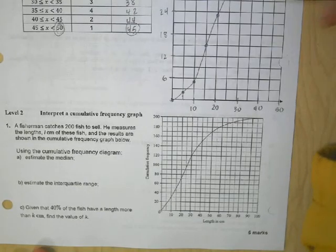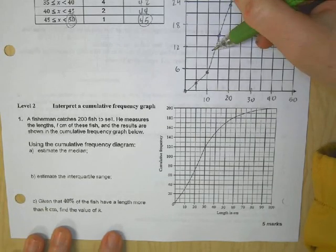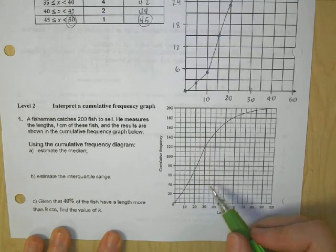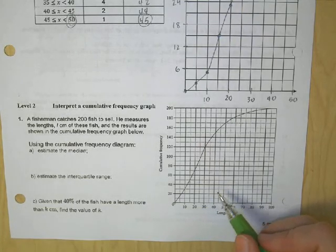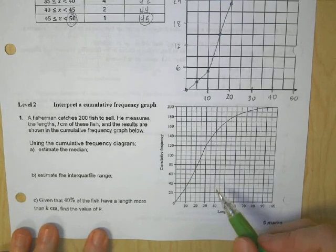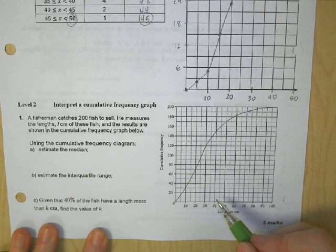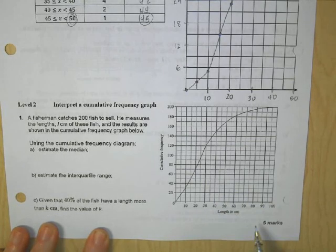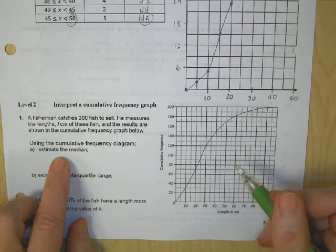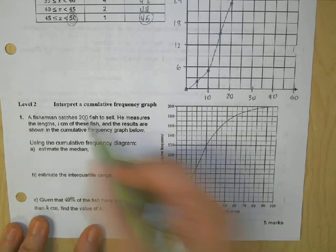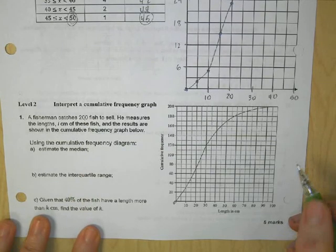Level two is actually interpreting a graph. You might have to use the graph you just made to answer questions, or I might give you a separate graph. Here, a fisherman catches 200 fish, measures them, and the results are shown on a cumulative frequency graph. Estimate the median.